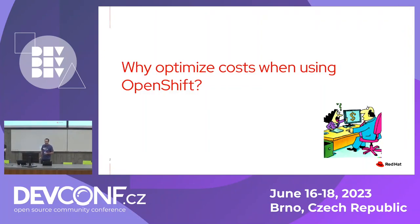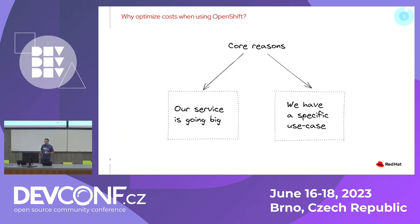We would like to start from the question: why should we optimize cost when using OpenShift? The answer is different for everyone — it could be your manager wanting you to optimize, or you may want to optimize yourself. Our team has two core reasons: our service, OpenShift CI, is growing every month and every year — we execute more and more. And second, we have a specific use case that differs from the default.